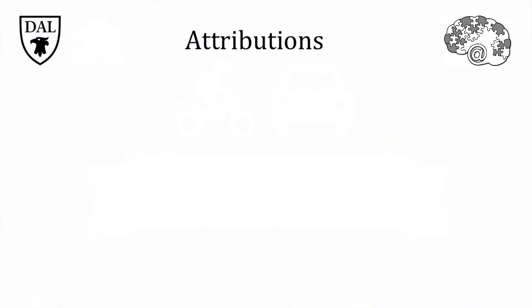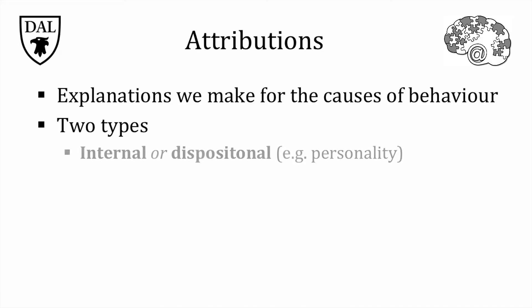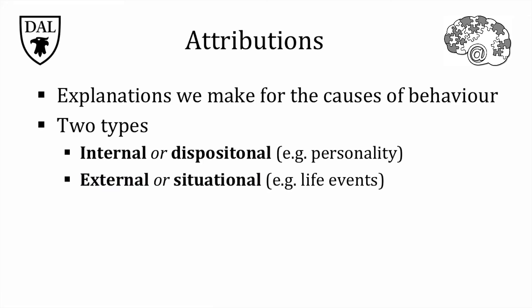So what are attributions? Quite simply, they are explanations we make for causes of behavior. They're also sometimes called causal inferences. Basically, they can come in two different types. We can explain the causes of behavior based upon internal or dispositional factors — for instance, somebody's personality — or we can explain behavior using external or situational attributions. For instance, we might consider whatever life events may have been happening at the time.